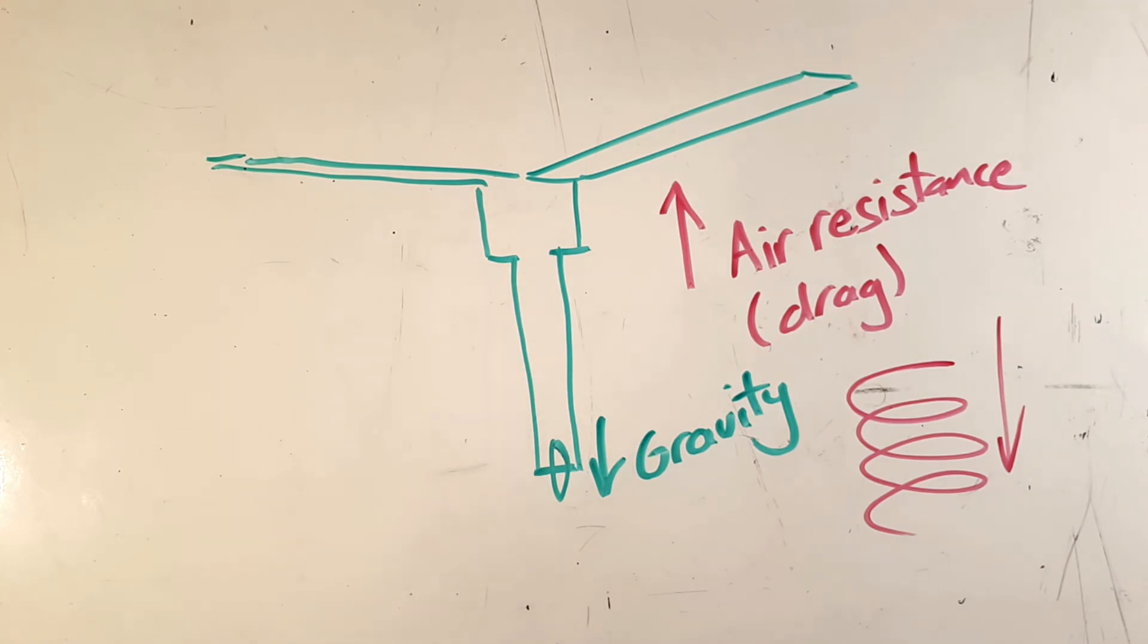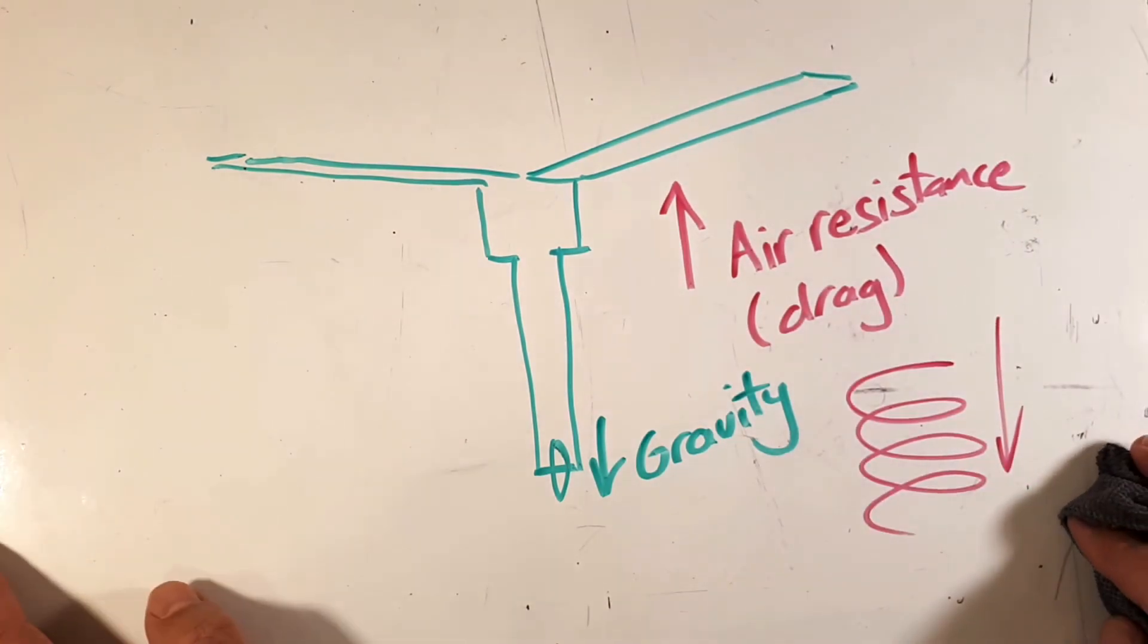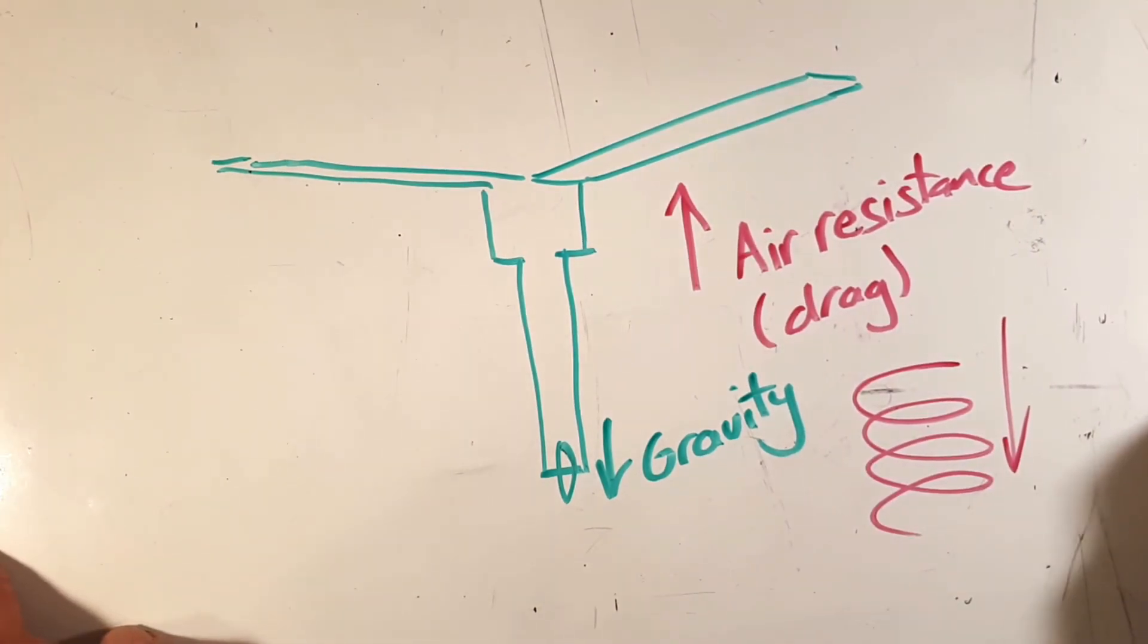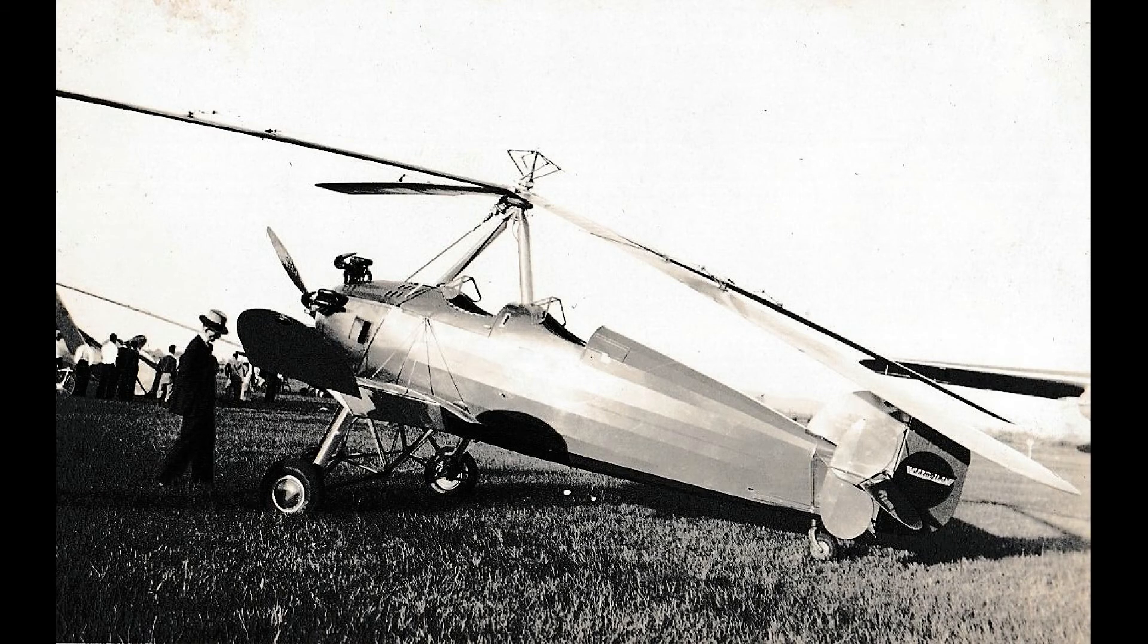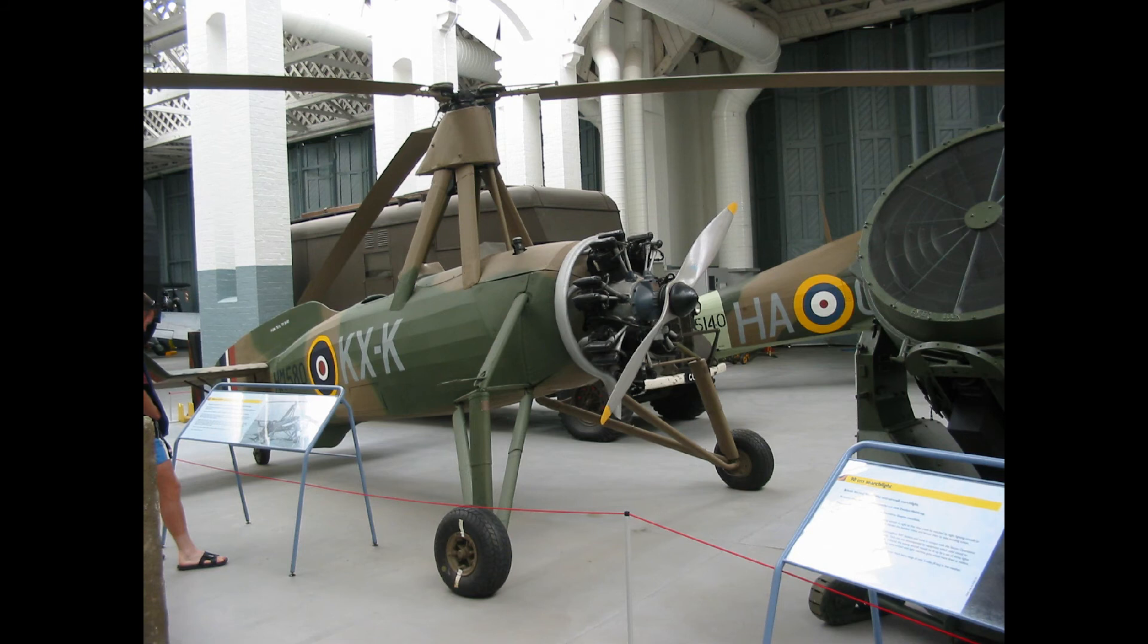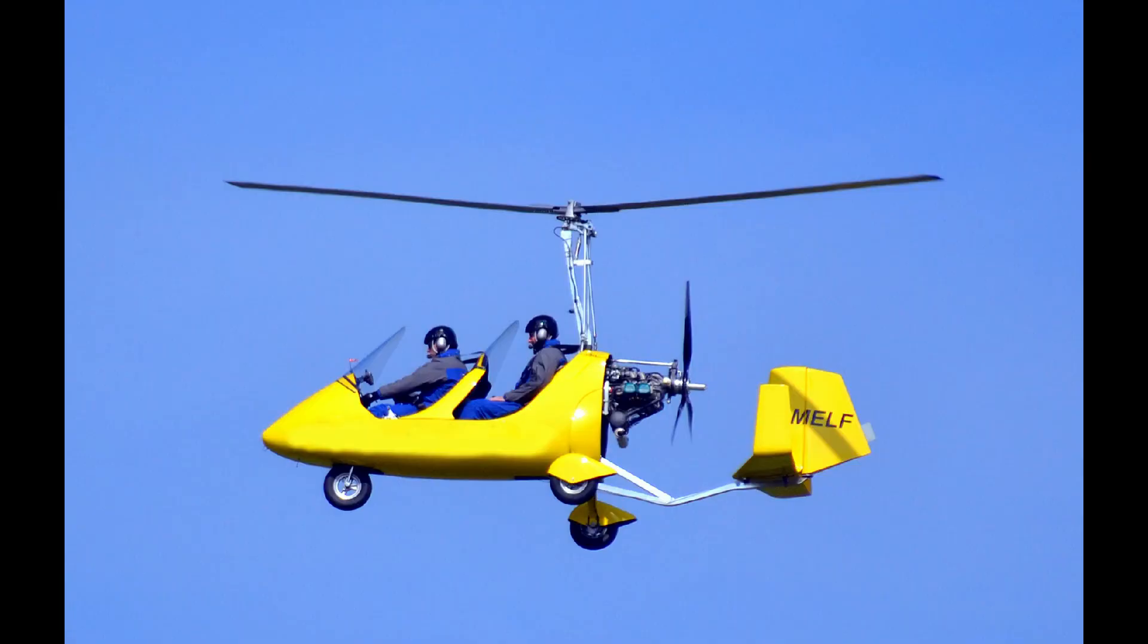Now the cool thing is there are actual machines that use the same principle and we'll have a look at those next. The very first autogyro was invented by Juan de la Silva in 1923. Gyros were developed for the military because they could fly slowly and land in very tight spots. During the second world war, gyrocopters were mainly used for surveillance. Modern gyrocopters are mainly used for recreational flying like microlites.